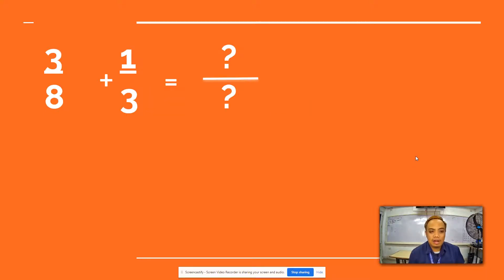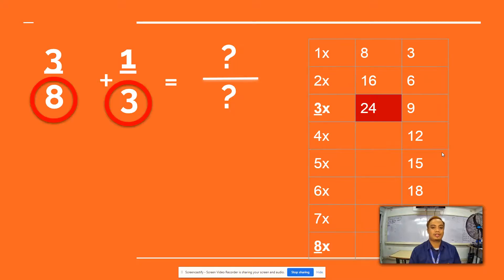Now, there are times wherein our fractions are dissimilar. That means they have different denominators. We cannot just add the denominator like with the numerator, but we have to find the LCD or the least common denominator. How do we do that?